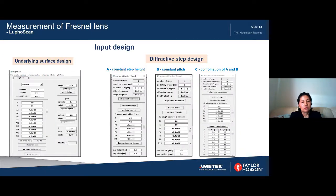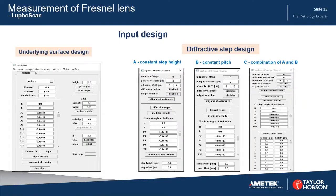For Fresnel lens measurement, before starting you need to input the design. The design is separated into two different parts: one is the underlying surface design, which you can type into the main interface, and the other is the diffractive step design. The software covers all three different types of Fresnel lens designs: type A (constant step height), type B (constant pitch), and a mix of type A and B.